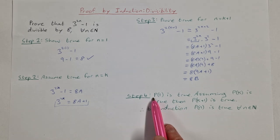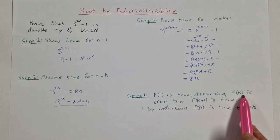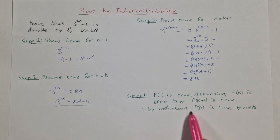Step 4 is always the same. P(1) is true. Assuming P(k) is true, then P(k+1) is true. By induction, P(n) is true for all n element of N.